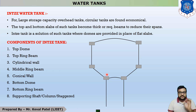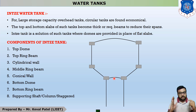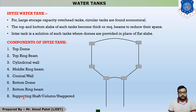So there are seven components in total: top dome, top ring beam, cylindrical wall, middle ring beam, conical wall, bottom ring beam, and bottom dome. The whole water tank rests on columns, also called staggered columns, and the beam connecting the columns is called bracing. Sometimes, in place of columns, the whole structure is constructed with concrete and is called a supporting shaft.